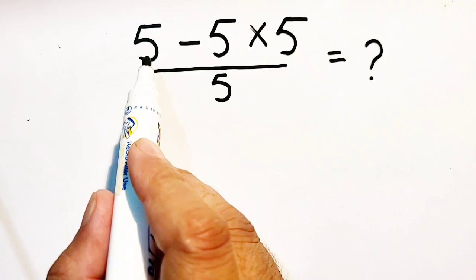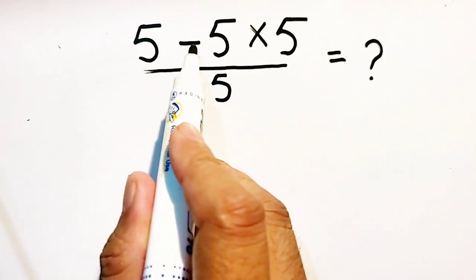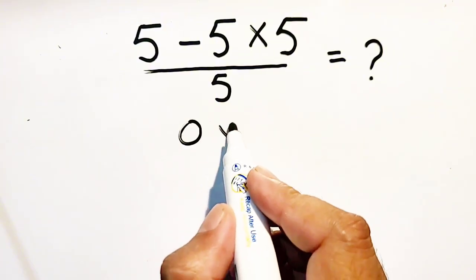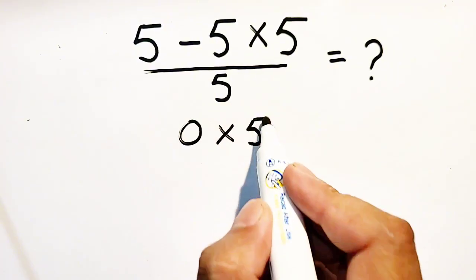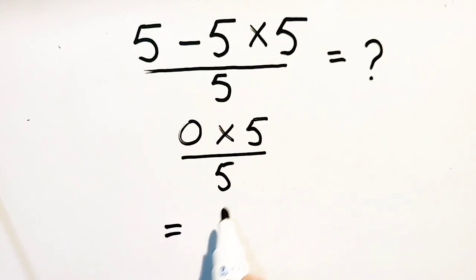Mostly students do this question in the way that 5 minus 5 is 0 multiplied by 5 divided by 5. So 0 multiplied by 5 is 0 by 5 is equal to 0.